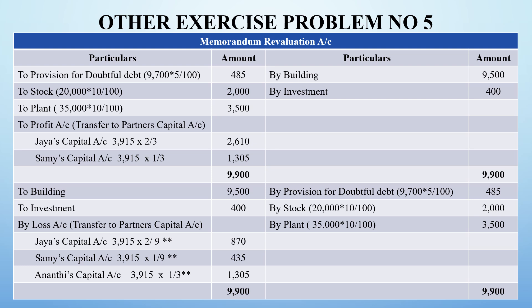The balancing figure of 3,915 rupees is split in the old profit sharing ratio between Jaya and Sami, since Anandhi has not yet entered. Jaya and Sami share in ratio 2:1, so Jaya gets 2,610 rupees and Sami gets 1,305 rupees, both transferred to their respective capital accounts. The revaluation account total comes to 9,900 rupees.